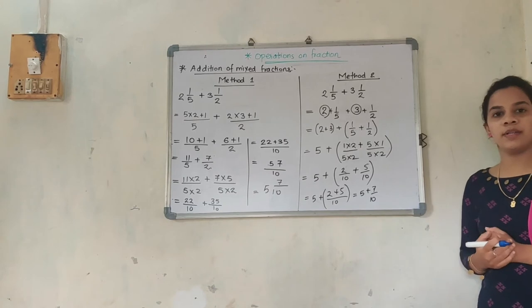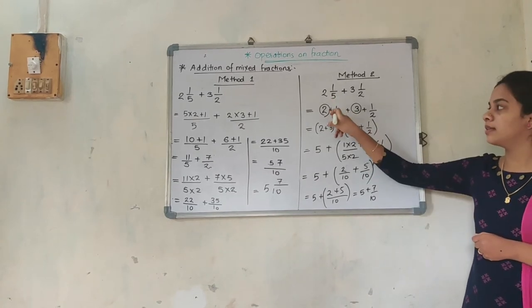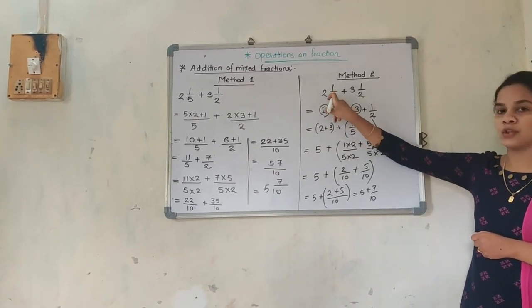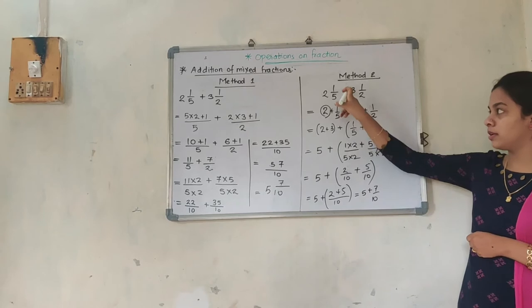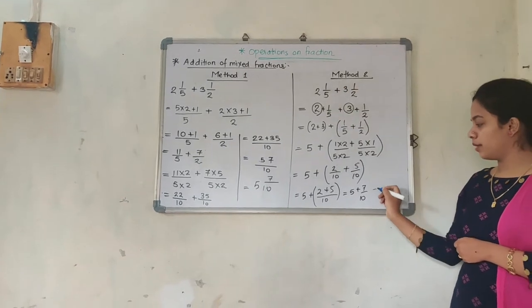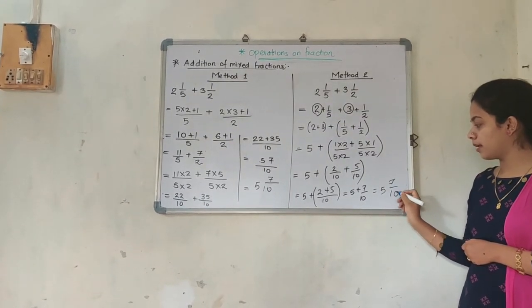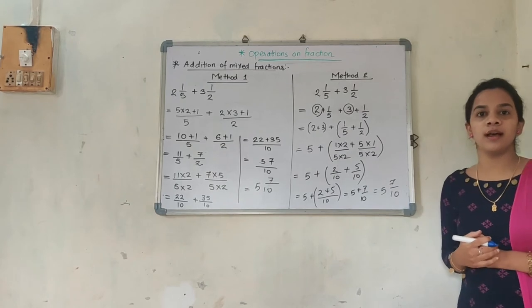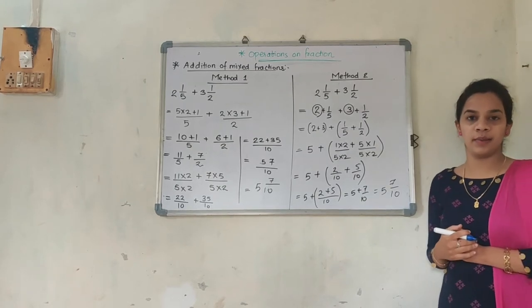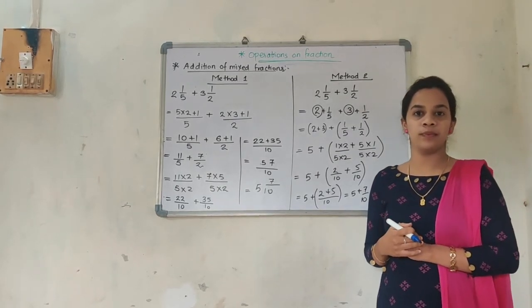So the answer is 5 plus 7/10, which I write as 5 and 7/10. Both sides you can see the answer is the same. So subtraction we will see now.